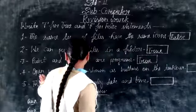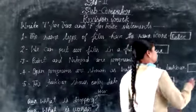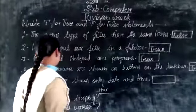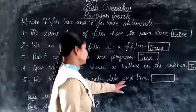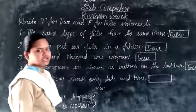Fourth, open programs are shown as buttons on the taskbar. Fifth, the taskbar shows only date and time.